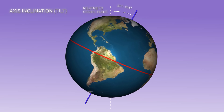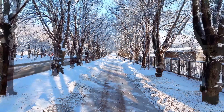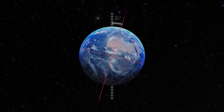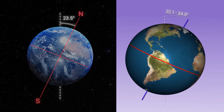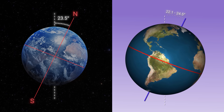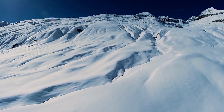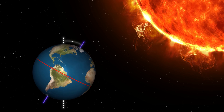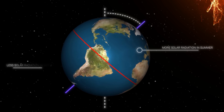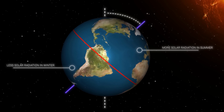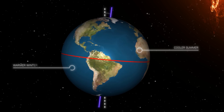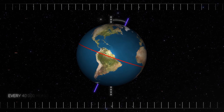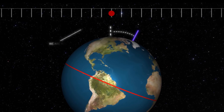Axis inclination is the angle of rotation of the axis as the planet moves around the Sun, and it is responsible for the change of seasons on Earth. Currently, the angle of inclination relative to the Sun is 23.5 degrees, but millions of years ago it ranged from 22.1 to 24.5 degrees, which is one of the main factors in the global climate. The greater the angle of inclination, the more each hemisphere receives solar radiation in summer and less in winter. Consequently, the less the axis is tilted, the cooler the summers, the warmer the winters, and the greater the ice cover. The axis tilt fluctuates every 40,000 years and we're currently in the middle of this cycle.